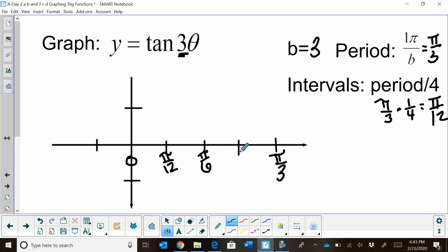And then 3 pi twelfths, that's really pi fourths, if I reduce it. And then 4 pi twelfths, that's pi thirds. So there are my quarter points.